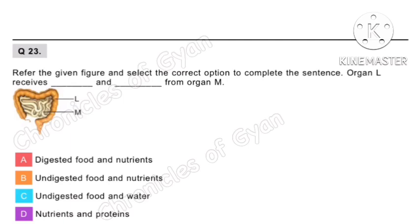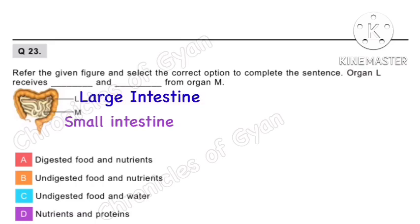Question 23. Refer to the given figure and select the correct option to complete the sentence: Organ L receives blank and blank from organ M. Here L is the large intestine and M is the small intestine. The large intestine receives undigested food and water from the small intestine. Option C is the correct answer.